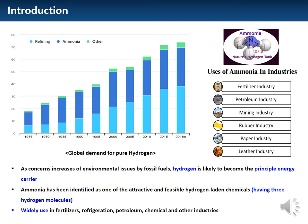Hydrogen is in the spotlight as a major energy carrier due to concerns over increasing environmental problems caused by fossil fuels. Among them, ammonia has been identified as one of the attractive and feasible hydrogen-laden chemicals. Also, ammonia is widely used in fertilizers, refrigeration, petroleum, chemicals, and other industries.